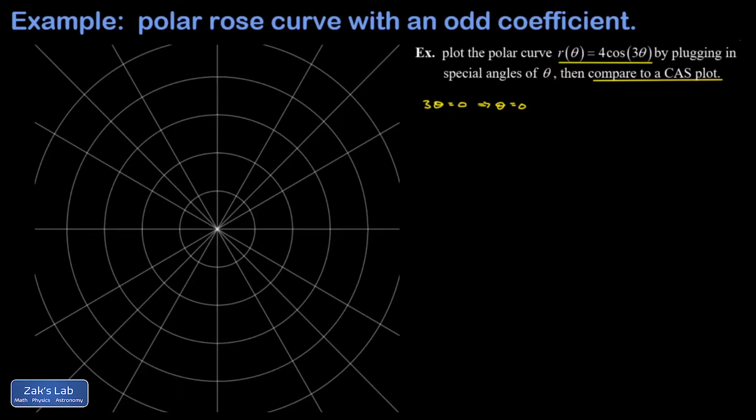So let's plot this point real quick. r is four, θ is zero, and I'm right here. That's our starting point.